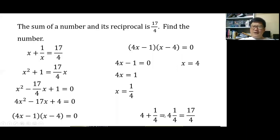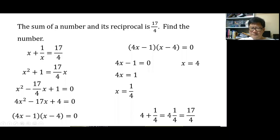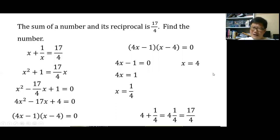Check with x equals 4: 4 plus 1 over 4 equals 4 and a quarter, which equals 17 over 4. The number is 4 (or 1 over 4, since both are solutions to this question).